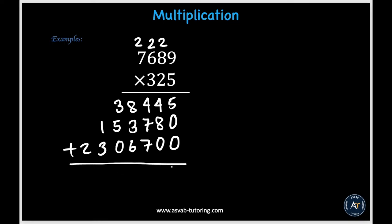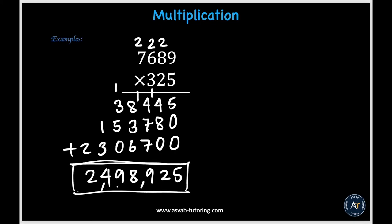Now all we have to do is add all of these digits up. In the ones place, 5 plus 0 plus 0 gives us 5. In the tens place, 4 plus 8 plus 0 gives us 12; put down 2 and carry 1. In the hundreds place, 7 plus 7 plus 4 plus 1 gives us 19; put down 9 and carry 1. In the thousands place, 6 plus 3 plus 1 plus 8 gives us 18; put down 8 and carry 1. Then 1 plus 3 plus 5 gives us 9. In the hundred-thousands place, 1 plus 3 gives us 4. And in the millions place we have 2. So our final answer ends up being 2,498,925.